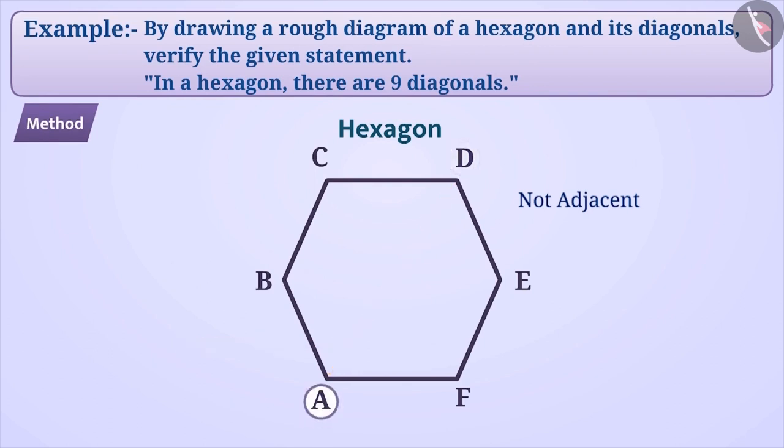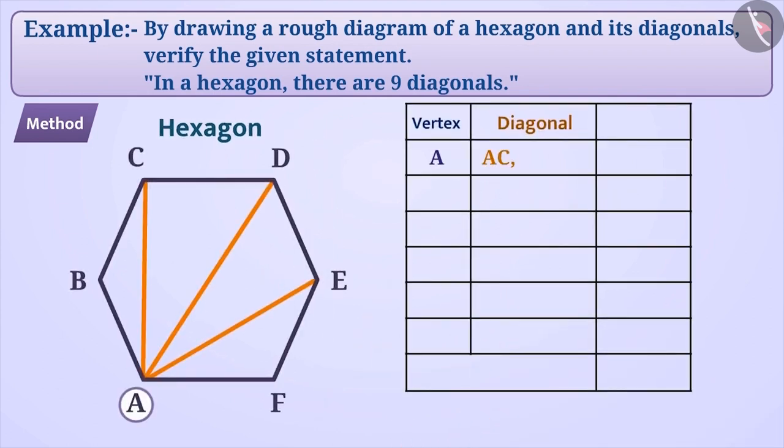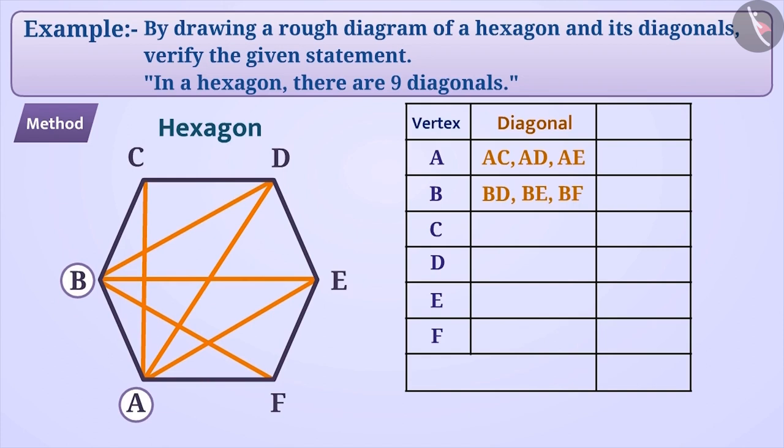First of all, we will take the vertex and join it with other vertices that are not adjacent. Like here, we have drawn the diagonals AC, AD and AE. Here, we know that from a vertex, 3 diagonals can be drawn. So, we will draw 3 diagonals from each vertex. From B, we can draw 3 diagonals like BD, BE and BF etc.